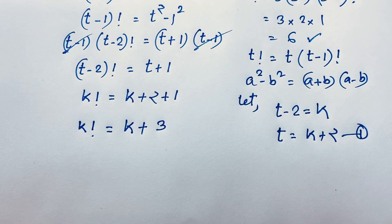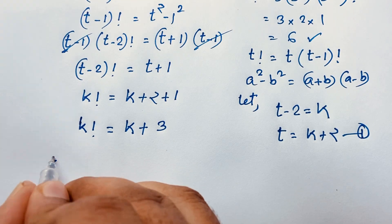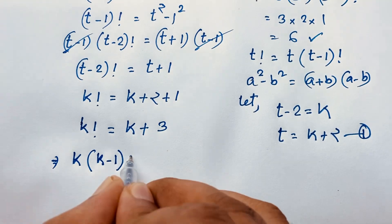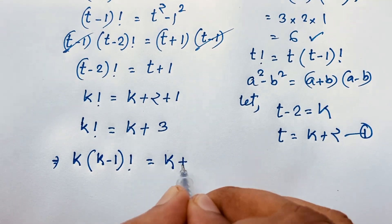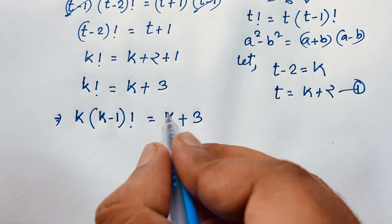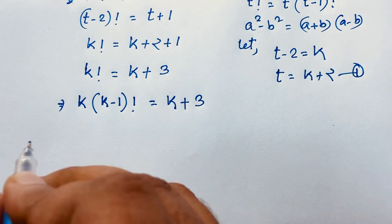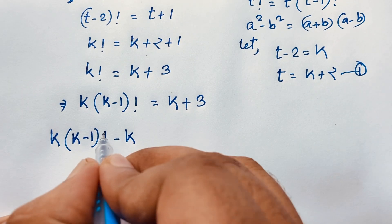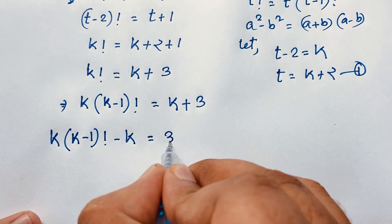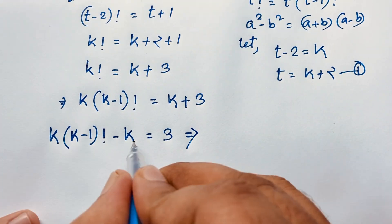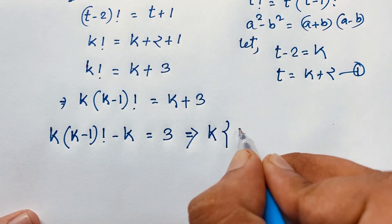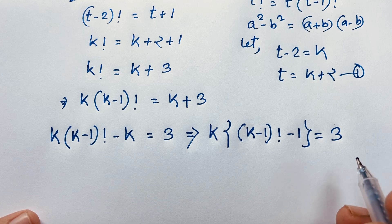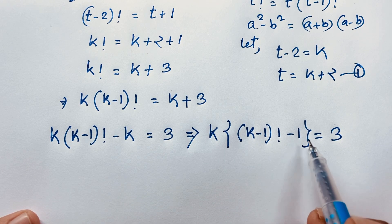So at this moment, k factorial can be expanded as k times (k-1) factorial. I solve this step by step. Moving the k to the other side by subtracting k from both sides gives: k times (k-1)! minus k equals 3. Factoring: k times (k-1)! minus 1, multiplied... we find k·(k-1)! - 1 = 3.